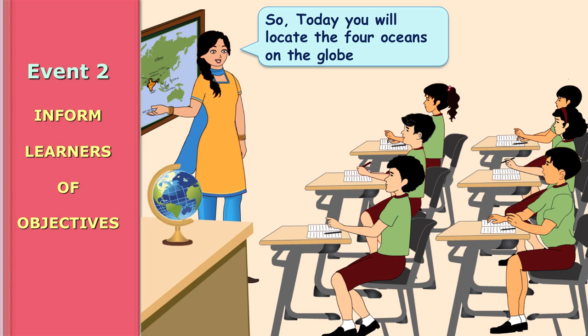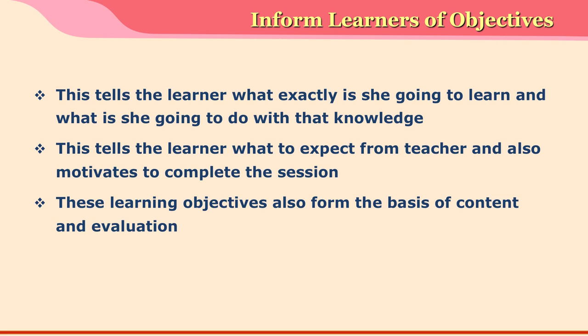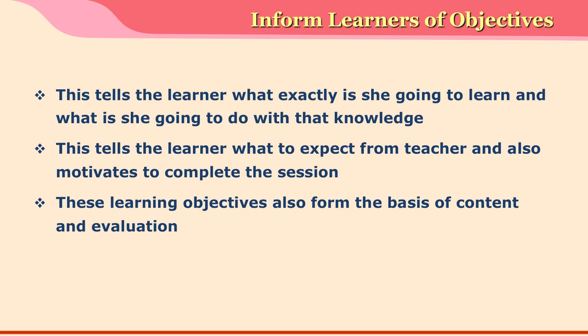The second event is informing learners of objectives. This tells the learner what exactly she is going to learn in that class and what she is going to do with the knowledge she acquires. For example, if you tell a small child that she is going to learn addition, it probably will not make much sense to her. But if you tell her that addition is going to help her count all the chocolates she has, that will make more sense. This also tells the learner what to expect from the teacher, motivating them to complete the class. These objectives also become the basis for the content the teacher selects and a base for evaluating learners.